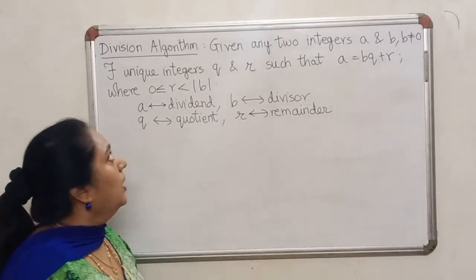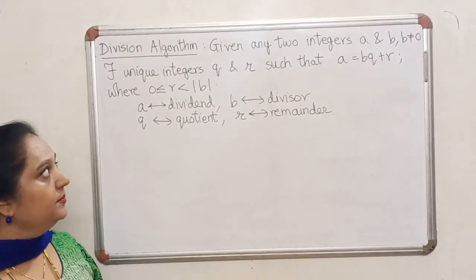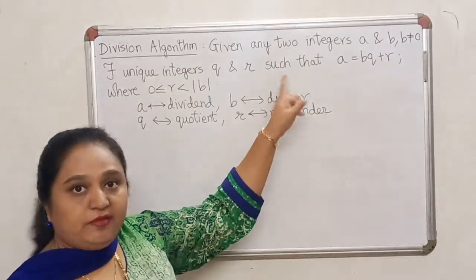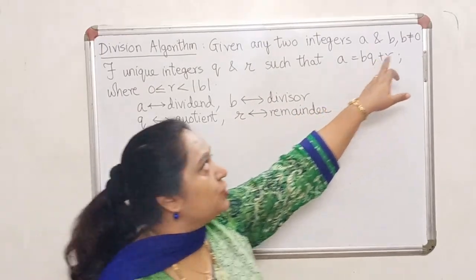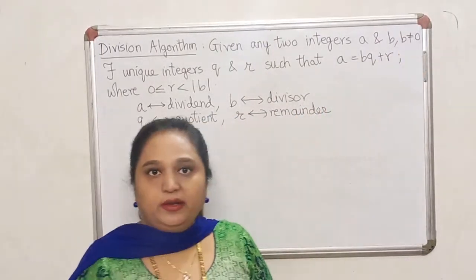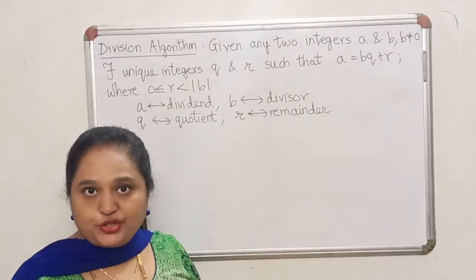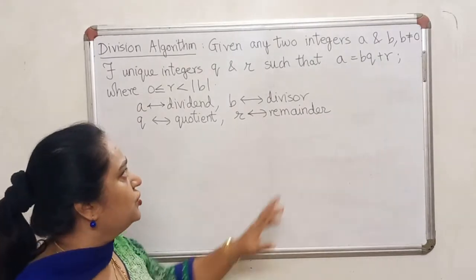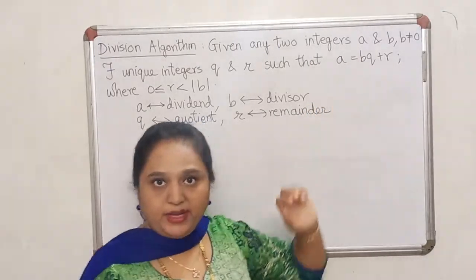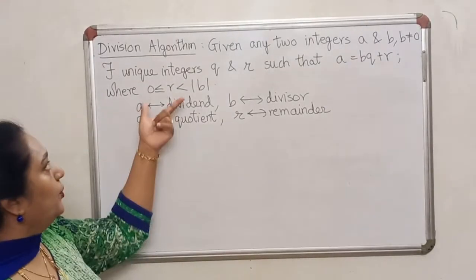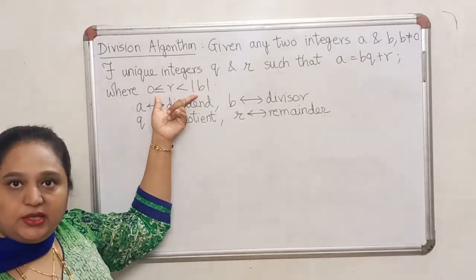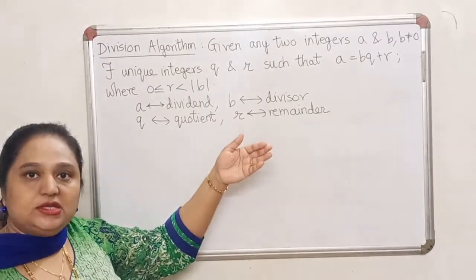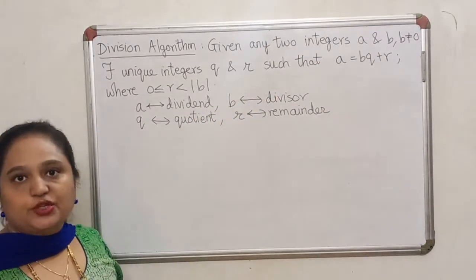So let's come to the statement of the division algorithm. It says that for any two integers A and B, if I wish to divide A by B, firstly B should not be equal to 0 — whatever number we are going to divide with should be non-zero. Then the division algorithm says that there is a method of dividing by which you will get a quotient and a remainder. Moreover, if you put these two conditions on the remainder, then the remainder becomes unique and consequently the quotient also becomes unique.